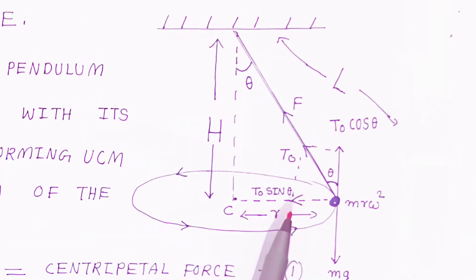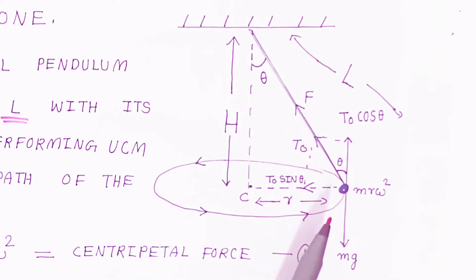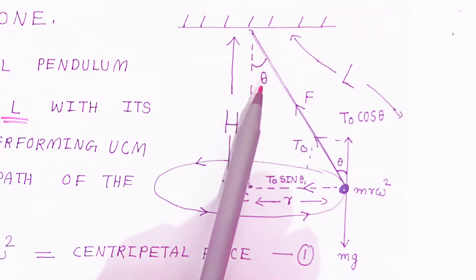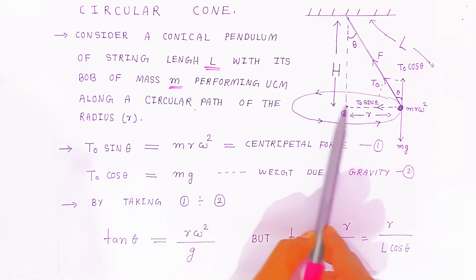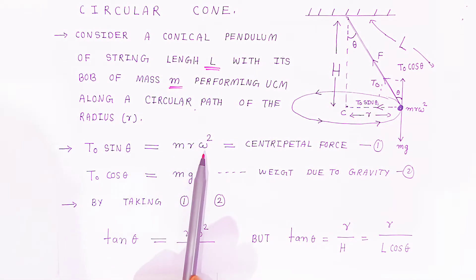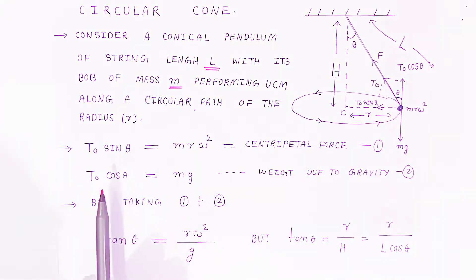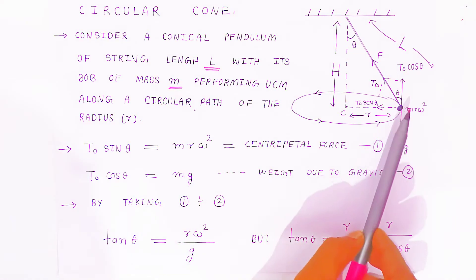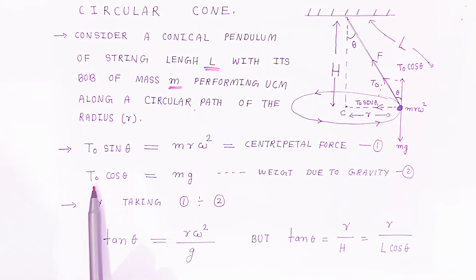T sinθ balances the centripetal force, which is mrω². Because of these forces the bob revolves in uniform circular motion. So we have two equations: T sinθ = mrω² and T cosθ = mg.